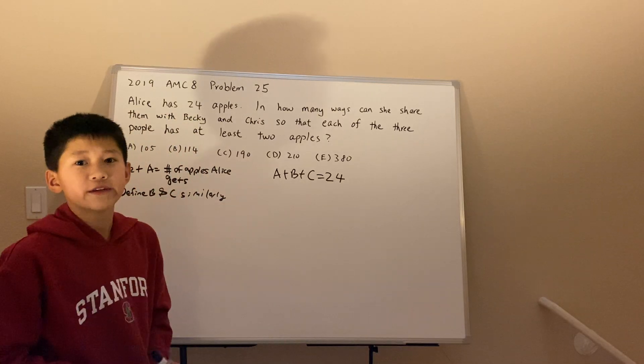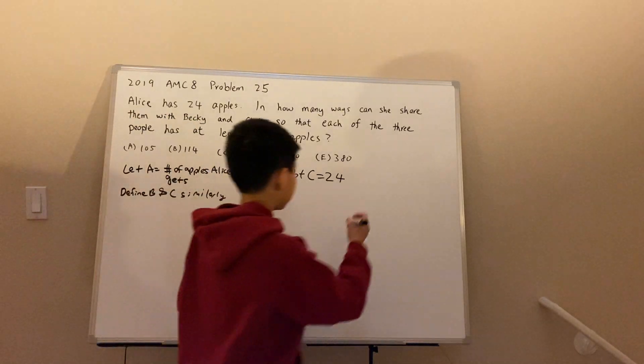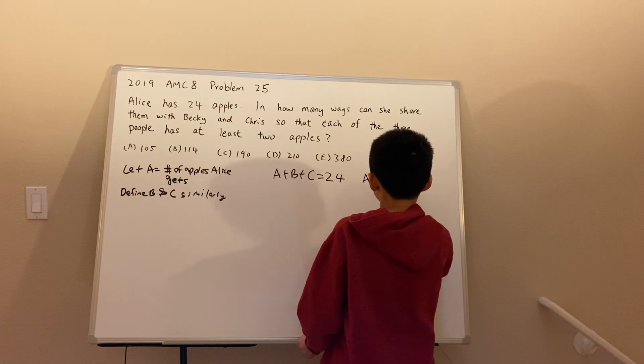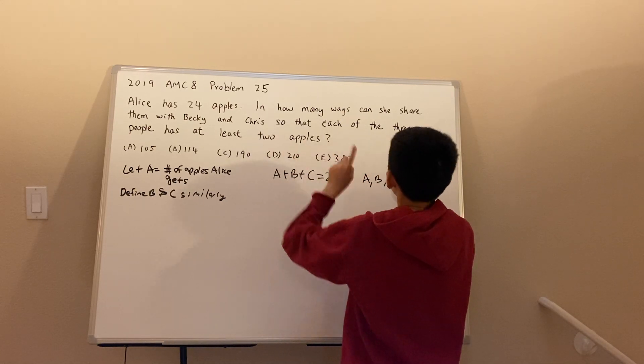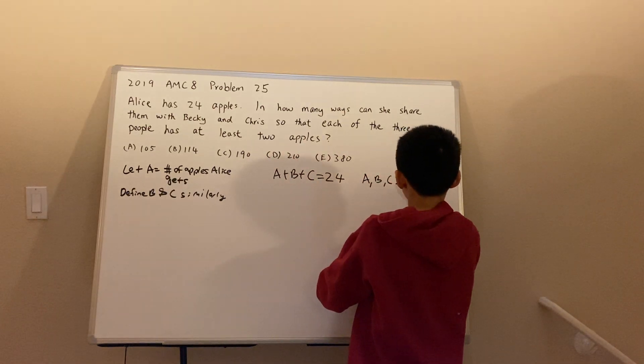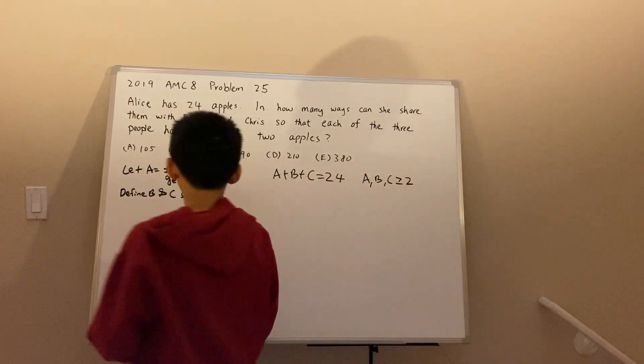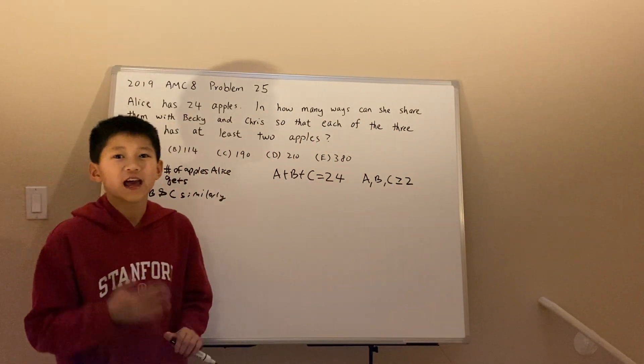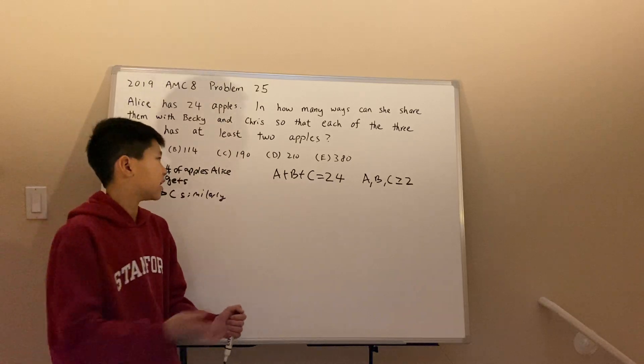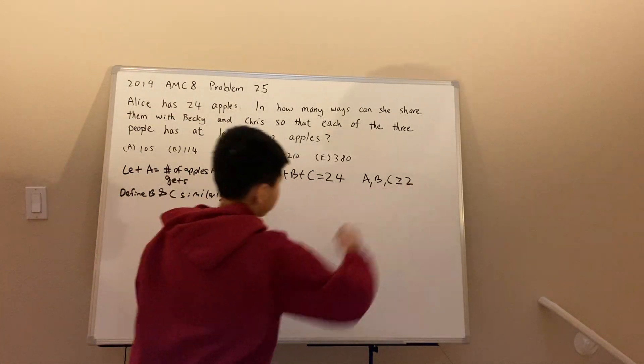We're also given a restriction. Each of the three people, A, B, and C, have to get at least two apples, so they're greater than or equal to two. This is a pretty nasty restriction because it's hard to do anything with the restriction greater than or equal to two.